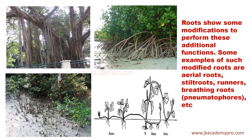Now let's learn about other functions of roots in detail. In the first picture, the banyan tree has structures coming out from its branches that grow deep into the soil — these are called aerial roots. They support the far-spreading branches of the banyan tree by growing into the soil and forming an anchor. In the second picture, roots come out from branches and go back into the soil — these are called stilt roots.